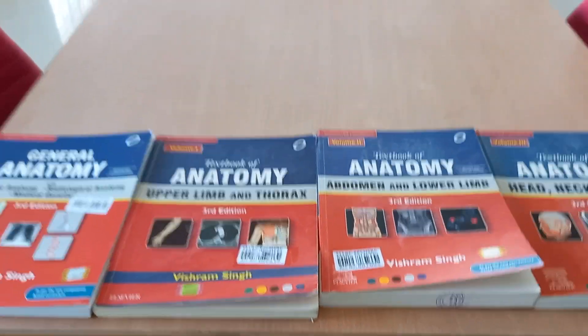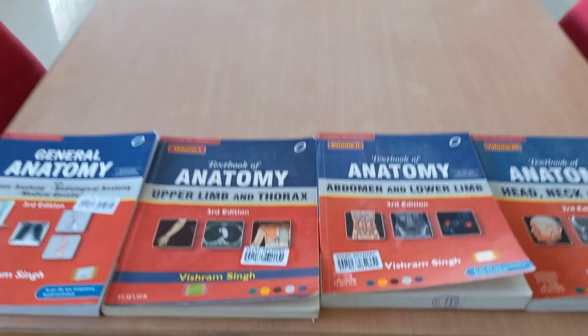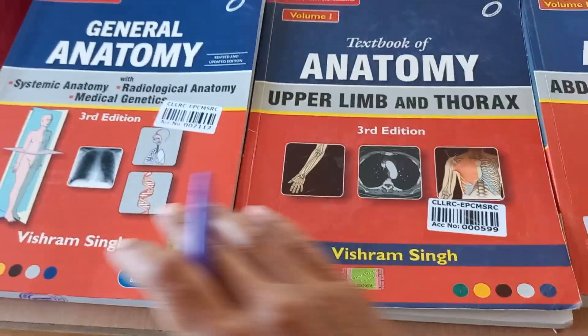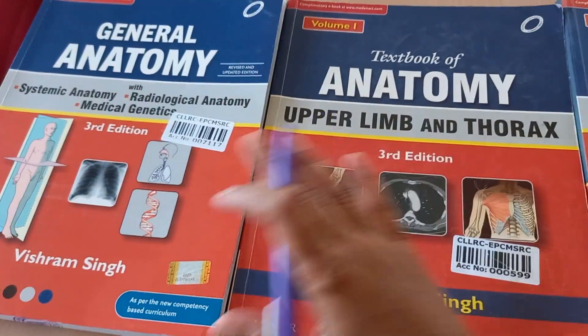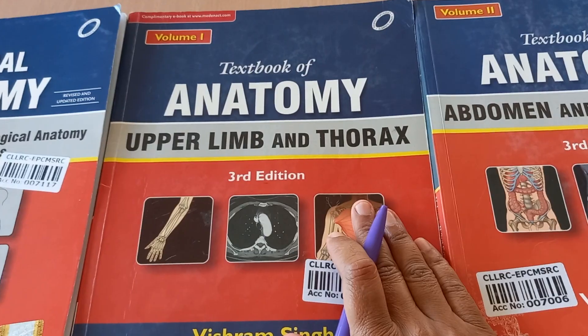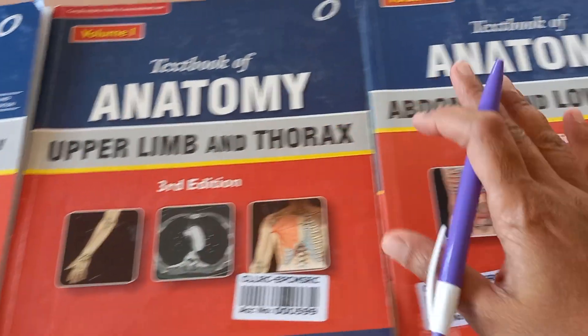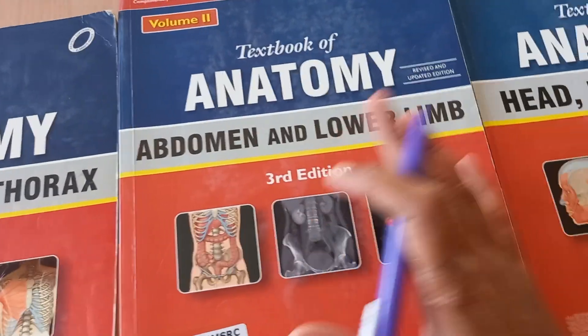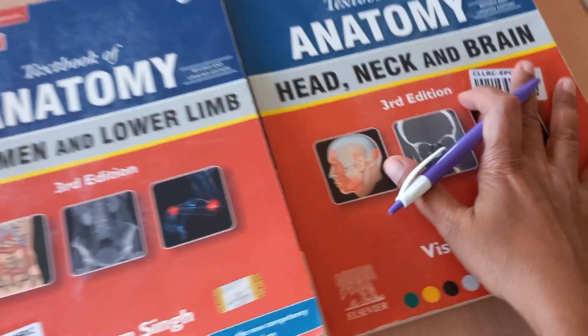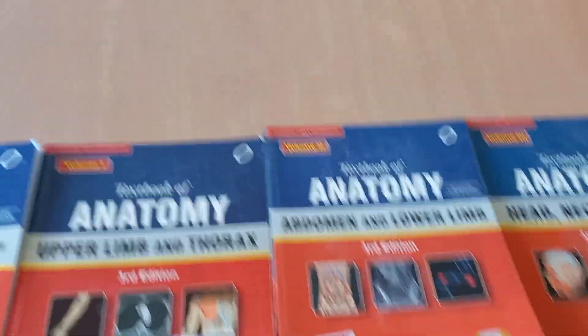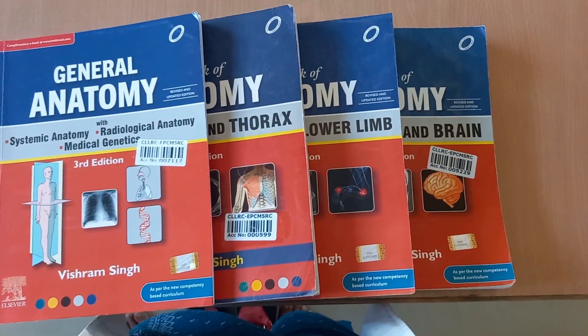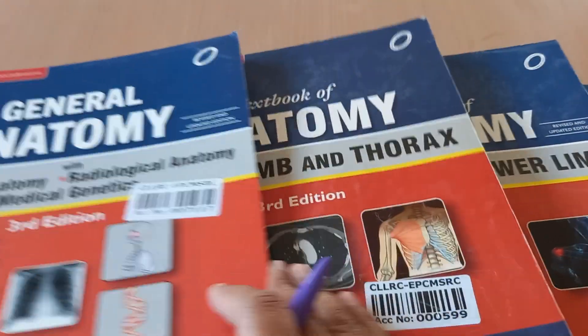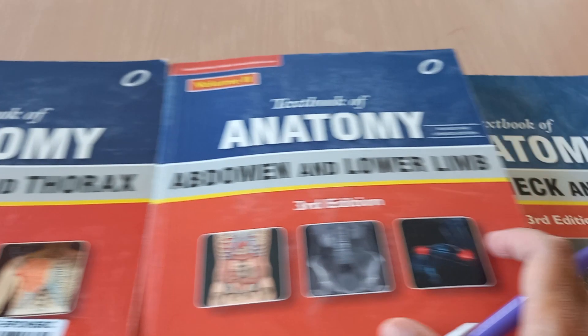Hello people, in this video we want to look at these books by Vishram Singh: General Anatomy, Anatomy Upper Limb and Thorax, Abdomen and Lower Limb, and Head, Neck and Brain. So these are the four books. Let's look at these books one by one.